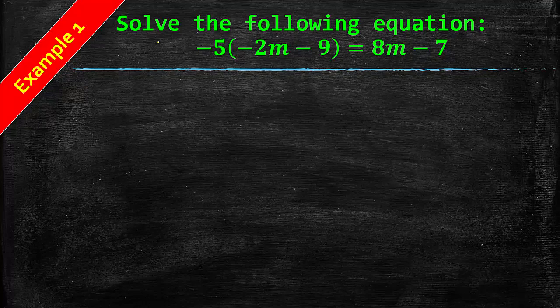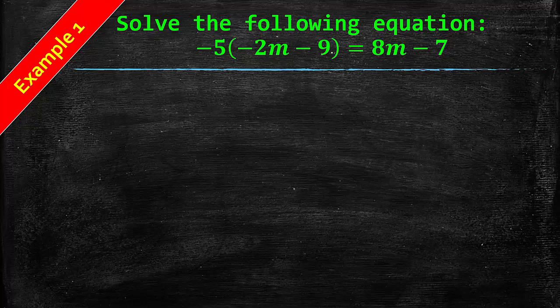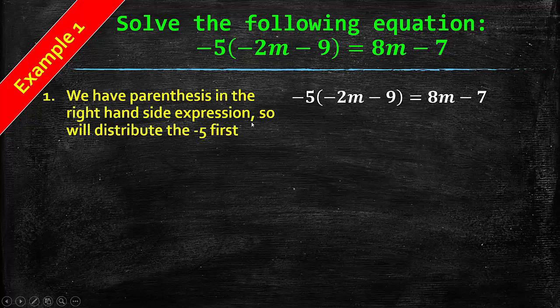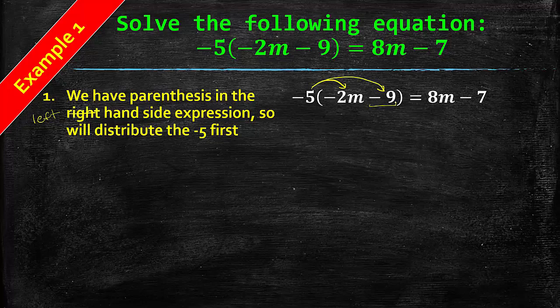First example. Solve the following equation: negative 5 times the quantity negative 2M minus 9 equals 8M minus 7. We have parentheses on the left-hand side of the expression, so we're going to distribute this negative 5 first. We take negative 5, we multiply it by negative 2M, and then we take negative 5 and multiply it by negative 9. Remember, include the symbol to the left. Even though it's negative 2M minus 9, we are going to include that as a negative.